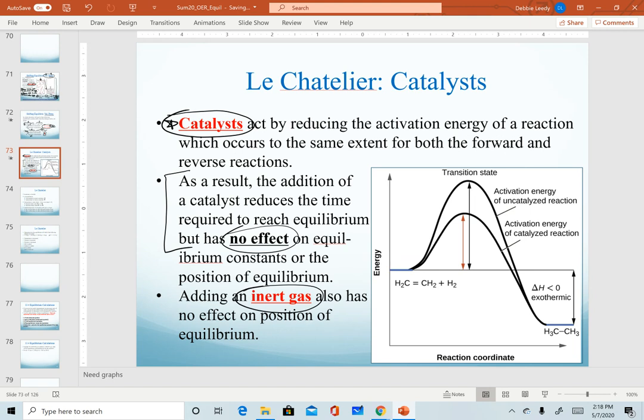Same idea with adding an inert gas. By inert gas, we mean typically our noble gases, or a gas that won't react with anything - helium, neon, krypton, argon, etc. They're called inert gases because they don't react. If I add an inert gas and it doesn't react with anything, it will have no effect on my equilibrium. Adding a catalyst or an inert gas are other examples where we would see no shift in equilibrium.